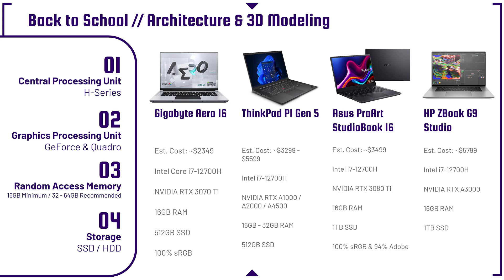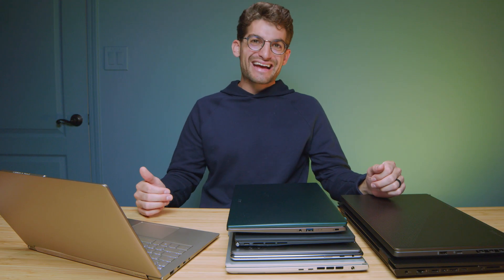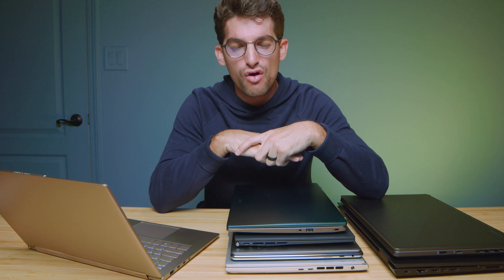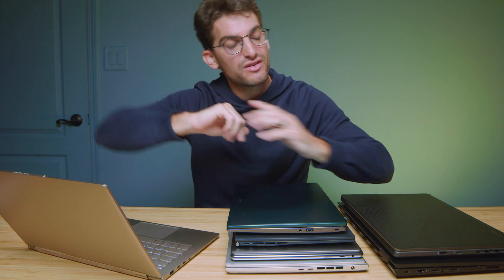For RAM in architecture and 3D modeling, 16 gigs is my absolute minimum, 32 is a great sweet spot, and 64 would be fantastic to make sure you have enough headroom for all the apps you're running. If you want to snag some deals right now, head to bestbuy.com — links in the description. They're running a back-to-school sale, and even after it ends, they always have great deals. Like this video if it brought you value and subscribe so you don't miss future uploads.